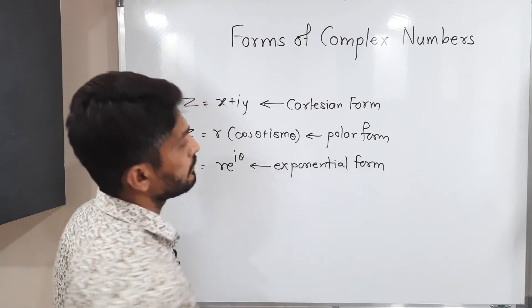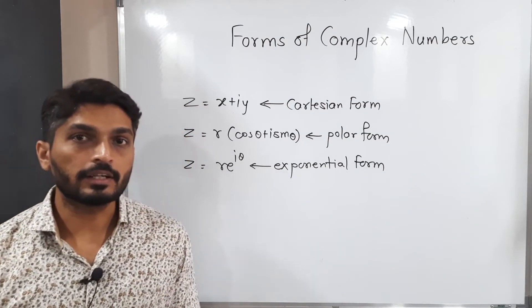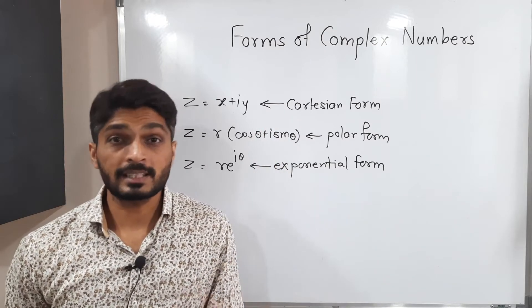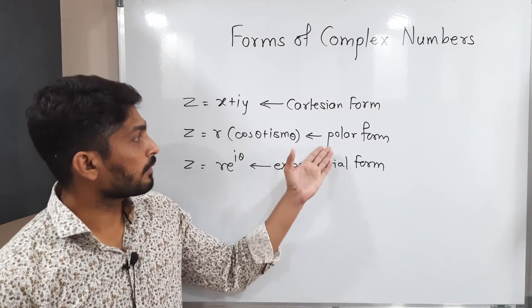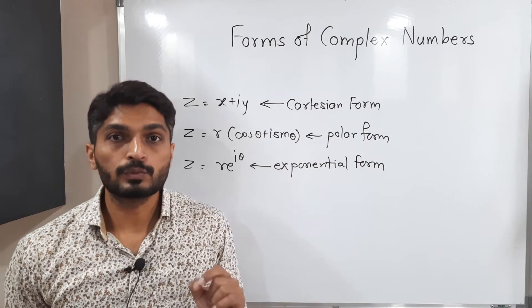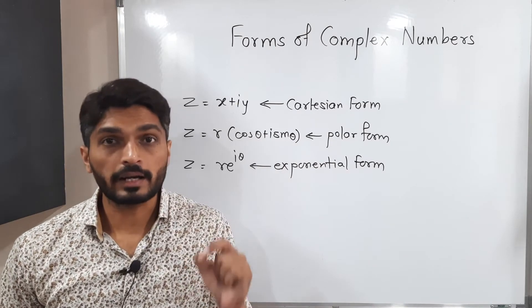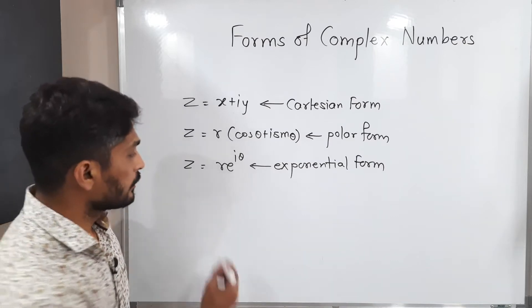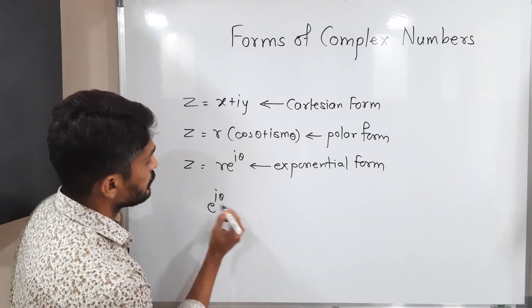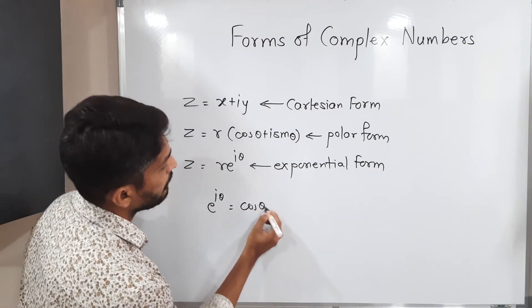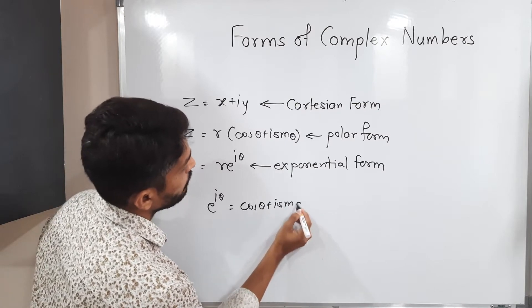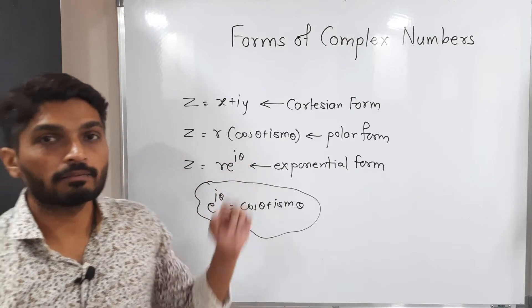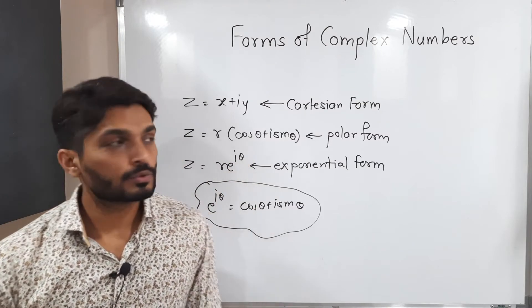So when we have any complex number, we can express it in three different ways. In Cartesian form we use variables X and Y, but in polar form and exponential form we use variables R and theta. Actually both polar and exponential forms are the same, since e raised to i theta equals cos theta plus i sine theta. So if you substitute that value, you get the polar form.